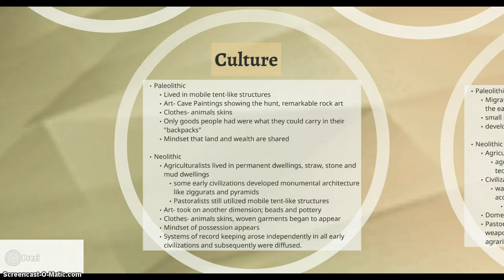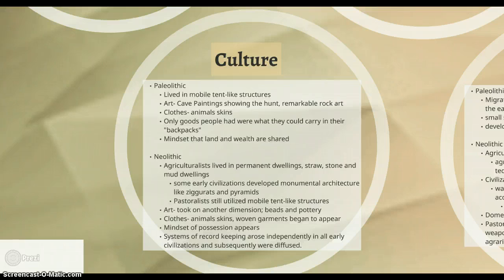Neolithic agriculturalists lived in more permanent dwellings, developed from straw, stone, and mud. Early civilizations later on, like in Egypt or Mesopotamia, had large-scale architecture like ziggurats and pyramids. Pastoralists still had to use mobile structures, but art took on a 3D form, like beads and pottery, due to the development of the pottery wheel. Possession began to appear — this is mine, I live here, this is my property, these are my animals.